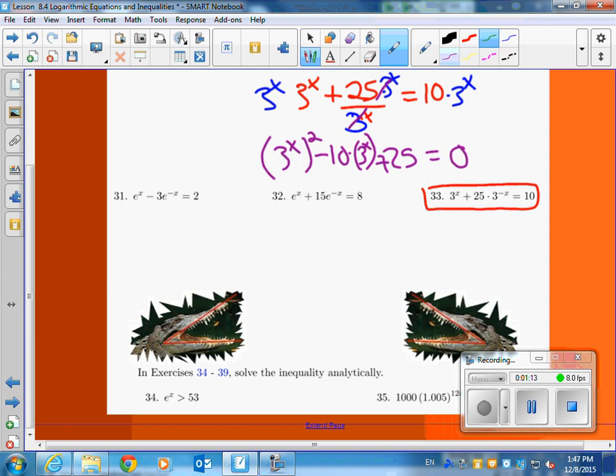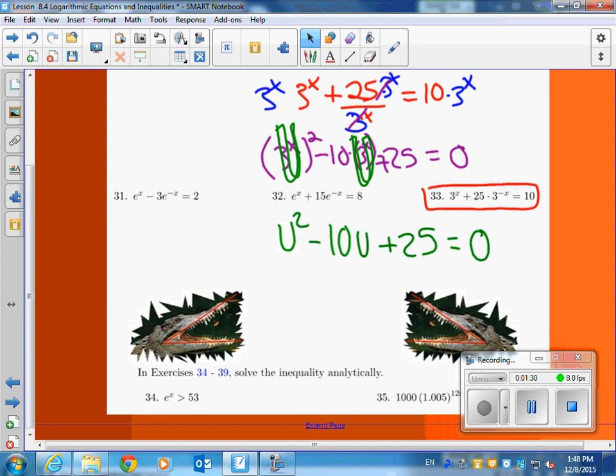So here is my, I'm going to make this a little ribbon u, a little ribbon u here. And so you have u squared minus 10u plus 25 equals 0. Did you smell that? Quadratic.